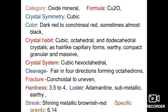Cuprite can sometimes be almost black. Crystal habit is cubic, octahedral, and dodecahedral crystals, as well as capillary forms, earthy, compact, regular, and massive types. Cleavage occurs in four directions forming octahedral form. Fracture is conchoidal. Hardness is 3.5 to 4.